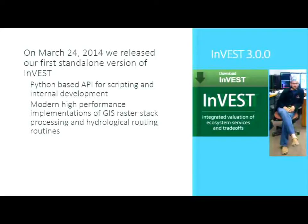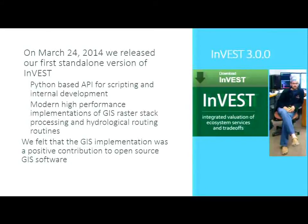This is where pygeoprocessing comes in: a high-performance implementation of raster stack operations and hydrological routing. We feel strongly that this is a positive contribution to open source GIS software. To give a sense of scale: InVEST gets around 500 downloads a month. Since posting pygeoprocessing to PyPI, we've had about a thousand downloads since last Thursday — obviously there's a wider audience for this kind of tool.